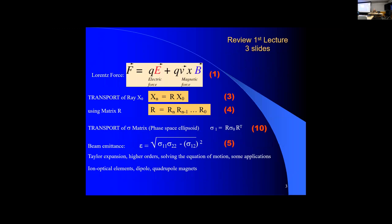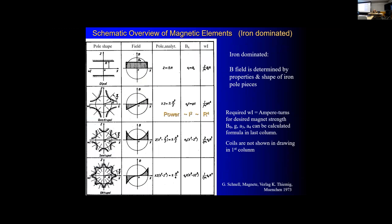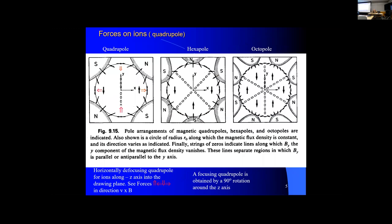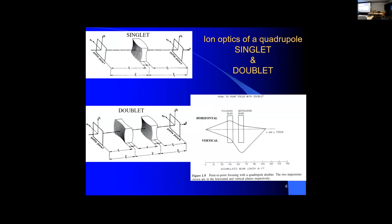In the first lecture, you of course learned several things that are summarized here for your overview. You have seen the magnetic elements, you know about the quadrupole, and you know that a singlet is horizontally focused and defocusing. So if you want an optical analogy, a quadrupole lens is not symmetric — it's focusing in one dimension and defocusing in another. You need a doublet at least to get a focus; otherwise, one dimension always goes to infinity.